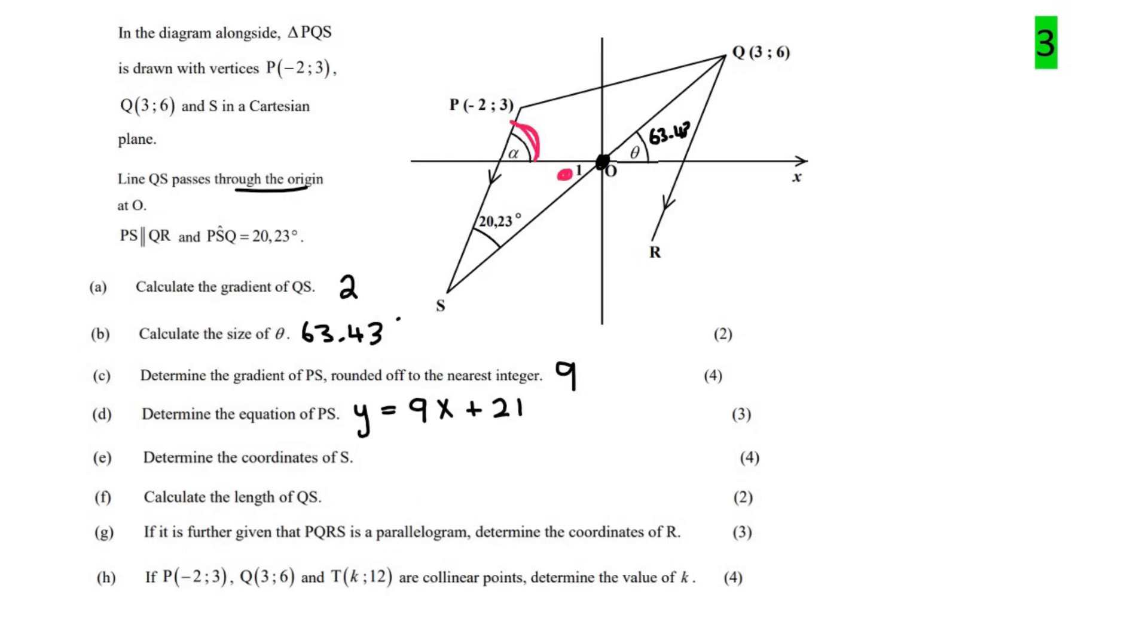Next question. Determine the coordinates of S. And that one's for 4 marks. I think what I would do here is I would realize that S is the intersection point between this line and this line. So we already know the equation of PS. So let's quickly work out the equation of QS. Now QS would be mx plus c because it's a straight line. We already worked out its gradient earlier as 2. And then because it's going through the origin, it actually won't have a y-intercept. Well, it would be 0. So this is the equation.